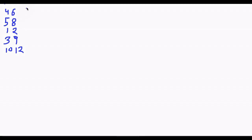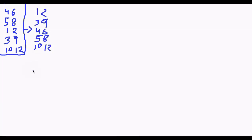Let's understand the solution by taking another example. Our first step will be to sort these intervals according to their start time. After sorting, what we get is: 1 to 2, 3 to 9, 4 to 6, 5 to 8, 10 to 12. Observe that these intervals are now sorted by their start time.